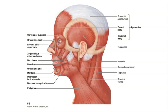Next we have the platysma muscle. This is a broad, superficial muscle located on the anterior part of the neck. Its origin point is on the inferior part of the neck where the neck meets the chest, and its insertion point is on the lower jaw. The insertion is the muscle attachment point that moves when the muscle contracts, so when the platysma contracts it moves the lower jaw.